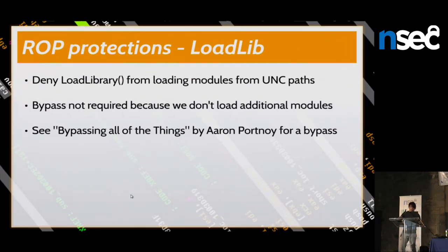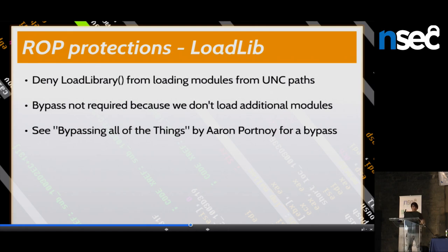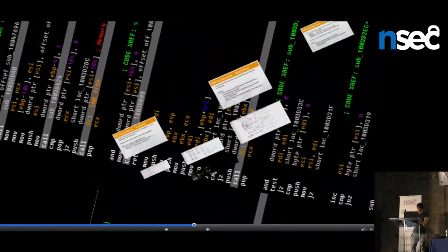Now I'll cover the five different ROP protections. The first is load library protection — every time LoadLibrary is called, it checks if the first argument is a UNC path to an attacker-supplied share, and if so, forbids execution. In my case I didn't need to bypass this because I'm not loading modules from attacker-supplied shares. For a bypass, see the paper 'Bypassing All The Things' by Arun Portnoy, though it targets EMET 3.5.